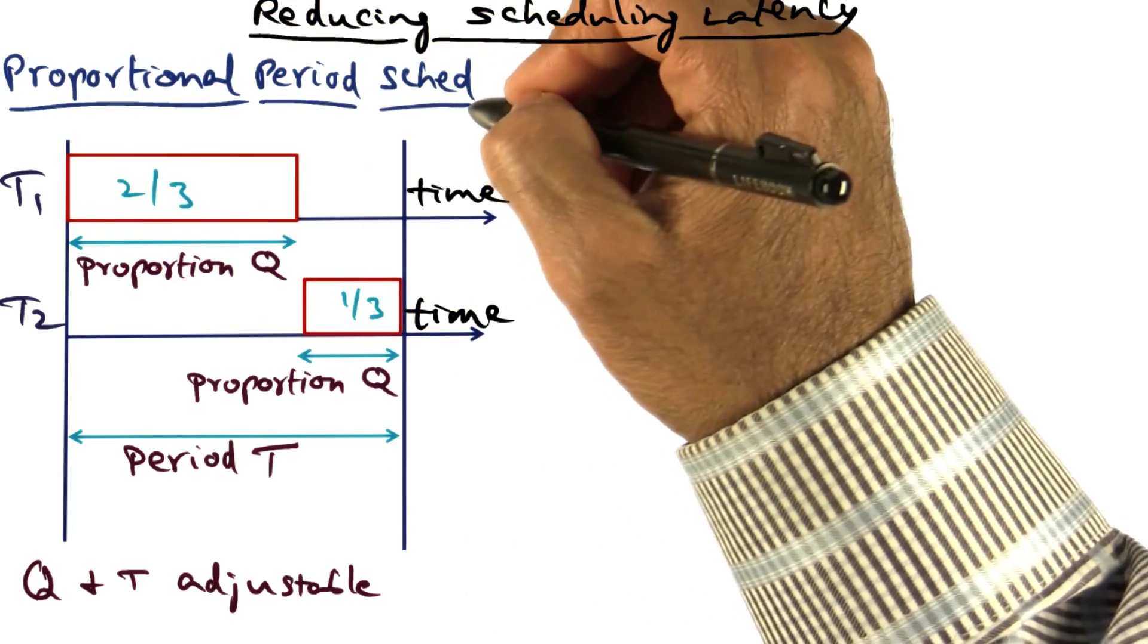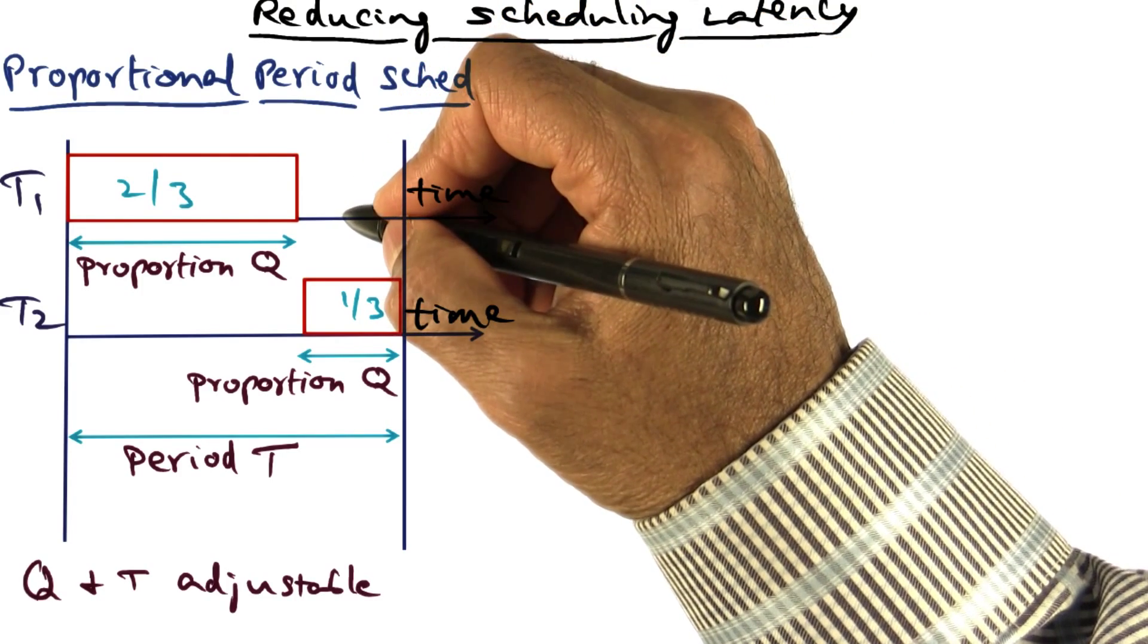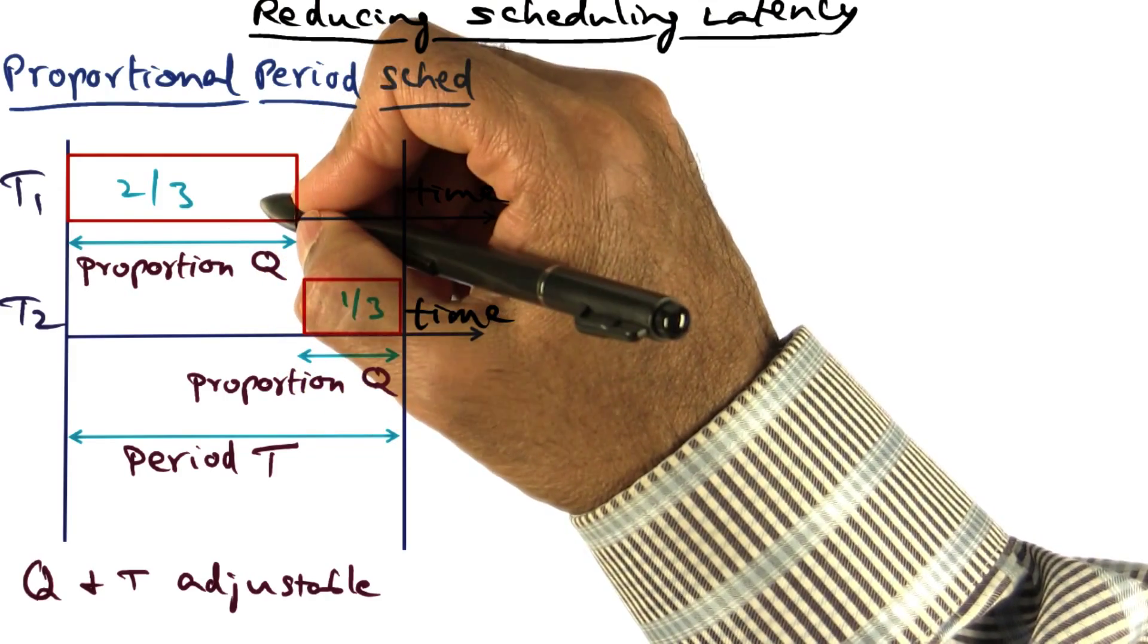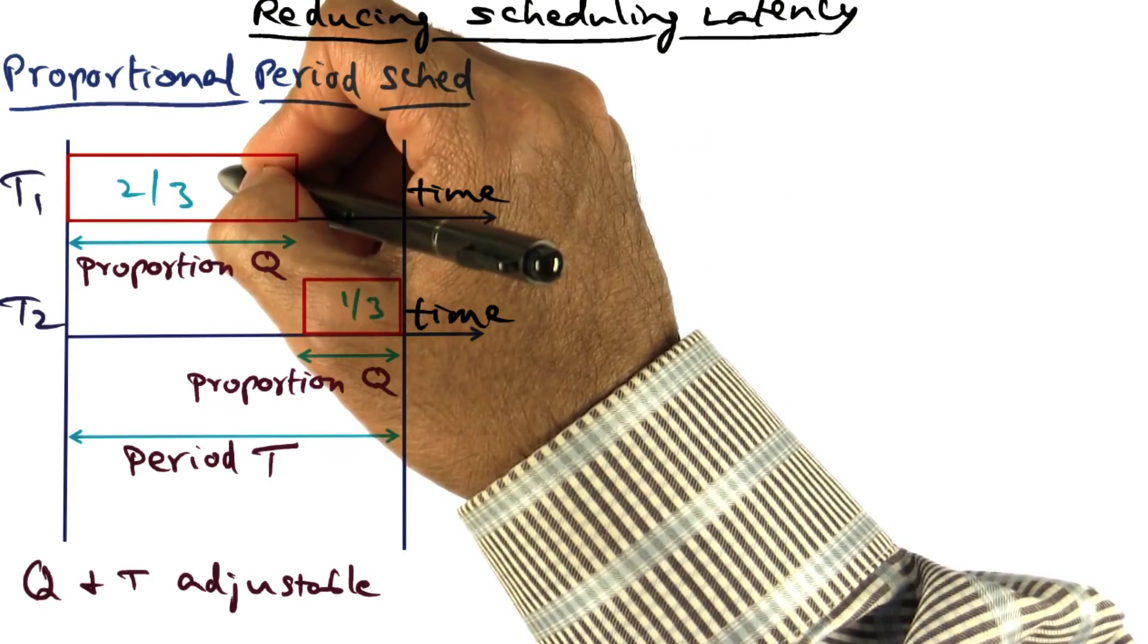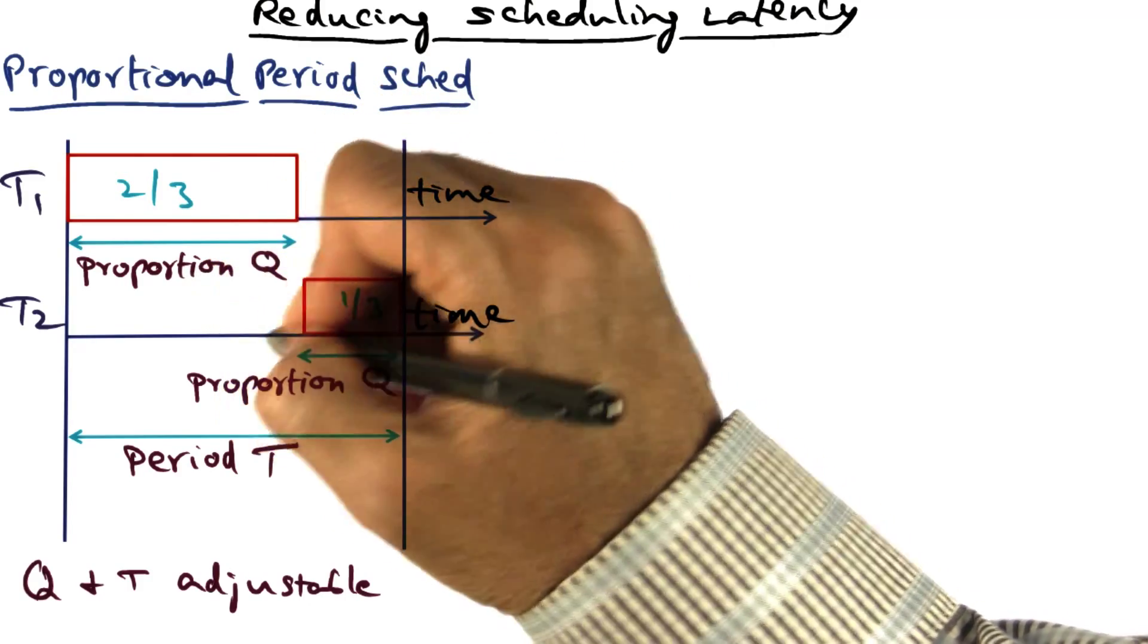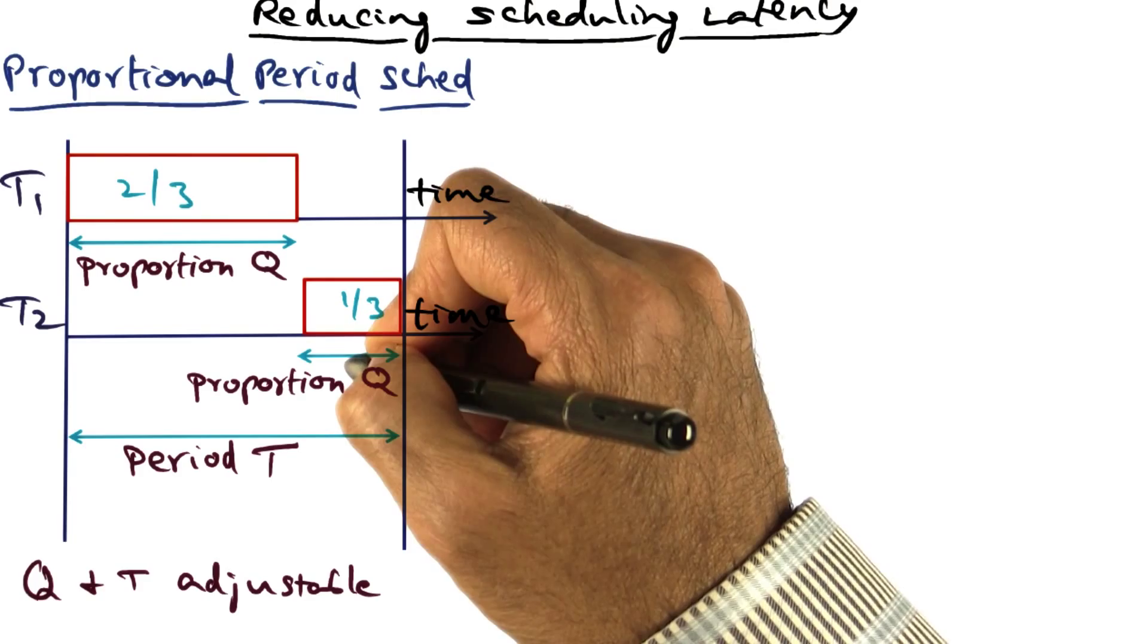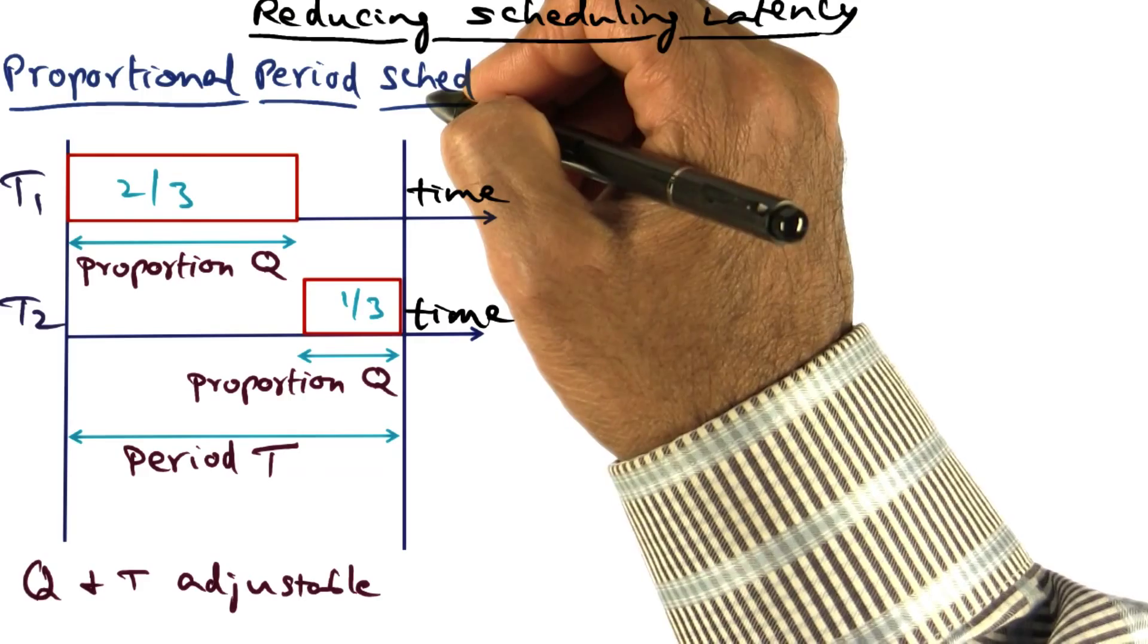And this is the idea behind proportional period scheduling, in which the scheduler does admission control. At the time that a process starts up, if it asks for a certain proportion of time, it sees whether it is possible to satisfy that request. So for example, if the scheduler has already promised T1 two-thirds of the time and T2 comes along and says, I also need two-thirds of the time in every period T, TS Linux is going to say no, it cannot do that because it doesn't have the capacity to accommodate both these requests simultaneously.